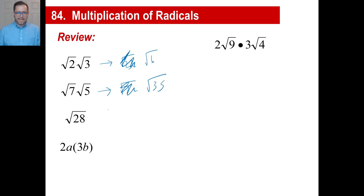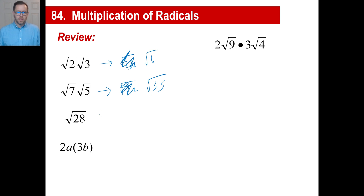The square root of 28 — don't forget what we can do when we break it down. There's no integer answer; the square root of 28 is between 5 and 6. What we do is break it into factors: 4 times 7. The square root of 4 is 2, so that comes out and we write our final answer as 2√7.